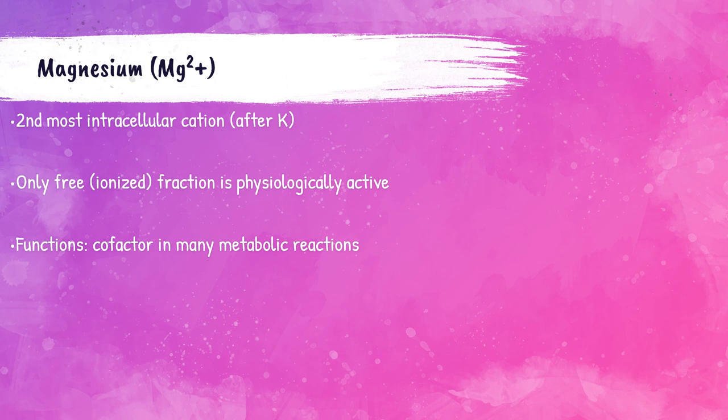Magnesium is the second most abundant intracellular cation, just after potassium. It's inside the cells — the body needs magnesium for a variety of different functions, including serving as a cofactor in many various metabolic reactions within the body.